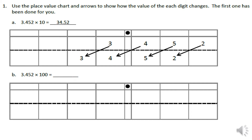The first one has been done for us. It shows we have 3 and 452 thousandths times ten, and the answer they got is 34 and 52 hundredths. In the place value chart, to the left of the decimal is the ones, and we have the tens place, the hundreds place, and the thousands place.